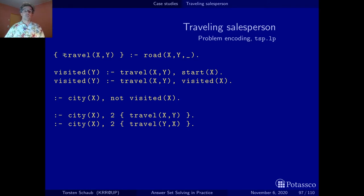Let's first look at the generator. This is again a very simplistic generator where we can decide for each road x and y whether we travel on this road or not. Our solution is represented by instances of this travel predicate here. And for each road we just decide do we take it into our solution or not. By using an underscore we just signal that we're not interested in the value of this variable.